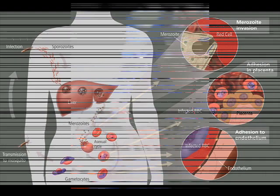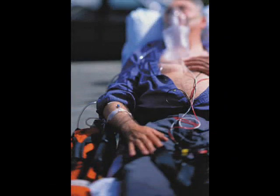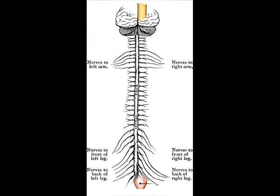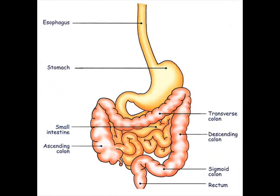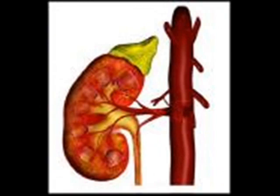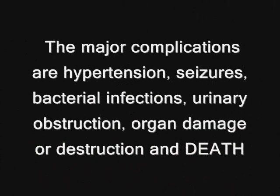In general, complications usually involve the cardiopulmonary, CNS, gastrointestinal, and urinary tract, along with the liver and spleen. Some of the major complications are hypertension, seizures, bacterial infections, urinary obstruction, organ damage or destruction, and death.